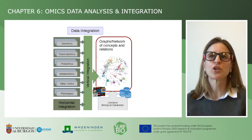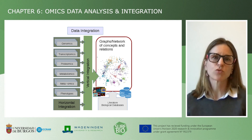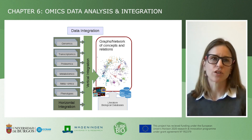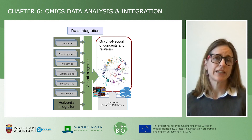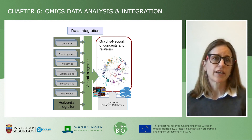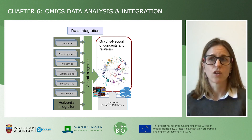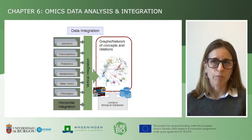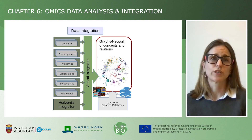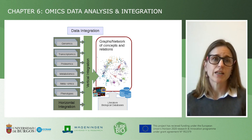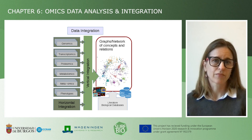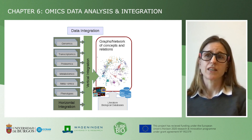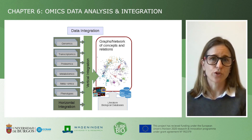To sum up, in this video we showed when and why it is important to integrate omics data to reach a holistic description of the system we are studying. We introduced a few methods that can be used to achieve data integration. We then focused on defining two types of possible integration of omics data: horizontal, for the same variable but different studies, and vertical, for the same samples but different data types. If you wish to learn more about the use of networks for data integration, you can refer to our extended seminar in the link in the resources. Can you think of some of your own data that you now want to go and examine further by integrating them?